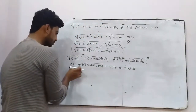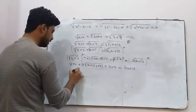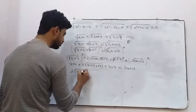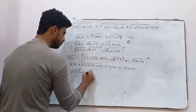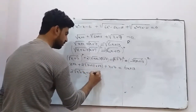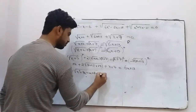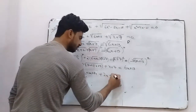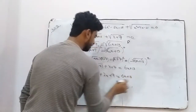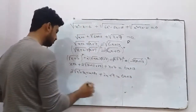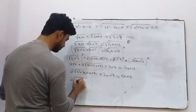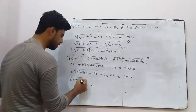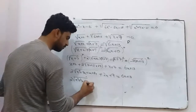Adding x terms and constants: (x plus 2) plus (x plus 7) gives 2x plus 9 on the left. Expanding (x plus 2)(x plus 7): x² plus 7x plus 2x plus 14 equals x² plus 9x plus 14. So 2x plus 9 plus 2·square root(x² plus 9x plus 14) equals 6x plus 13. Moving 2x plus 9 to the other side gives 4x plus 4.